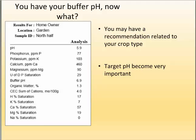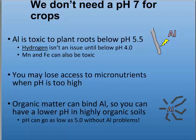So you have your buffer pH back from the lab — now what? You've gotten a recommendation and possibly a calculated lime rate. But you want to look at your soil and decide if that's right for you, especially based on which test was used. The lab may have factored in the crop type you gave them, but the target pH you're trying to reach is very important, especially given your soil type.